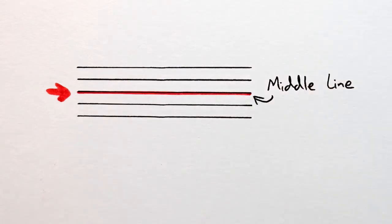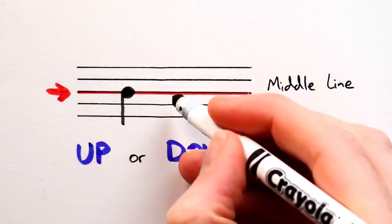And rule 3: Notes on the middle line may have their stems drawn up or down, depending on the situation.